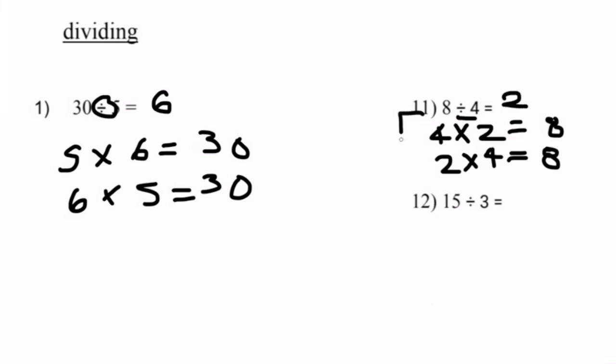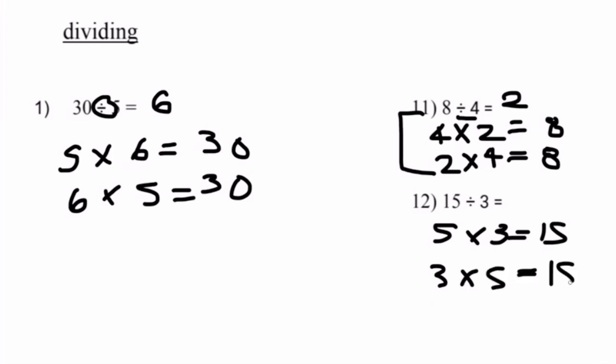If you haven't noticed, all these equations are somewhat connected to each other — 4 times 2 equals 8, and 8 divided by 4 equals 2. Number 12, 15 divided by 3. We already know that 5 times 3 equals 15, and 3 times 5 also equals 15. Therefore, when you divide 15 by 3, we should get 5.